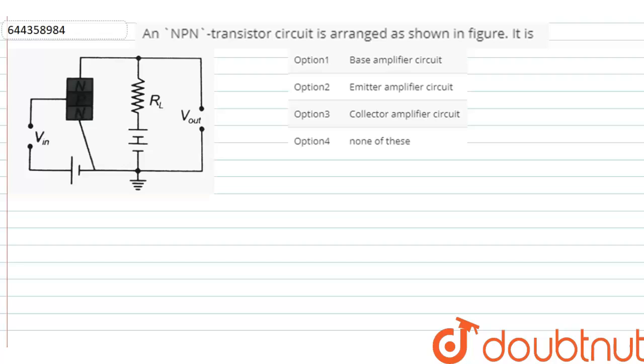The question is an NPN transistor circuit is arranged in the following arrangement. It is option one base amplifier circuit, option two emitter amplifier circuit, option three collector amplifier circuit, option four none of these. So this is our circuit diagram.